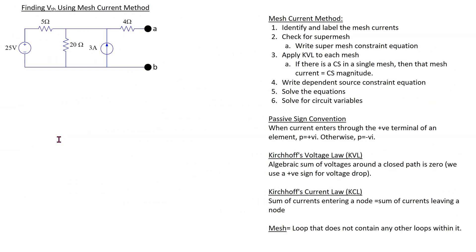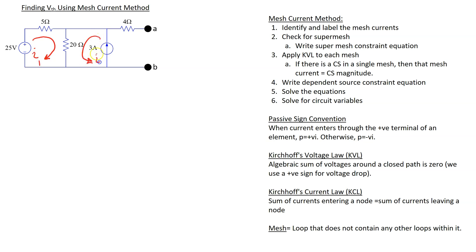Next, we are going to find VTH using the mesh current method. Irrespective of the method used, we will still get the same answer. The main steps in applying the mesh current method are illustrated here. In this case, we have two meshes. We have a current source, but the current source is only a part of a single mesh. So this means we do not have a super mesh, and having the current source in a single mesh will actually make some of our analysis simpler. Suppose we have mesh currents I1 and I2 with assumed directions.